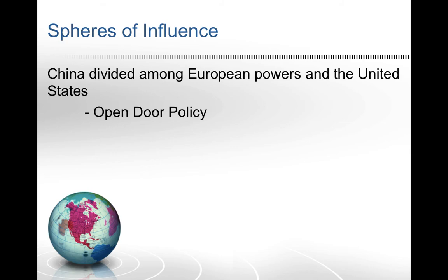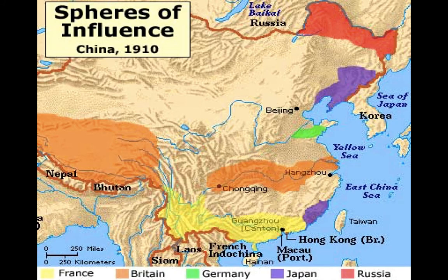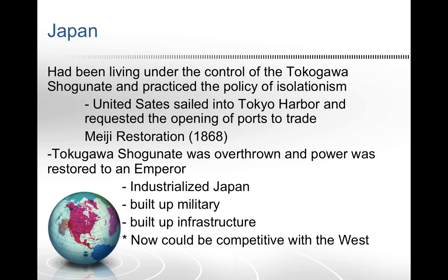China was carved up through spheres of influence — not full colonial control, just little territorial pieces. On the map you can see the different spheres: France in yellow, Britain in orange, Germany in green, Japan in purple, and Russia in red. Beijing remained under Chinese control. Hong Kong, which the British received in the Treaty of Nanjing, is visible on the map. By 1910 we're moving toward 1914.